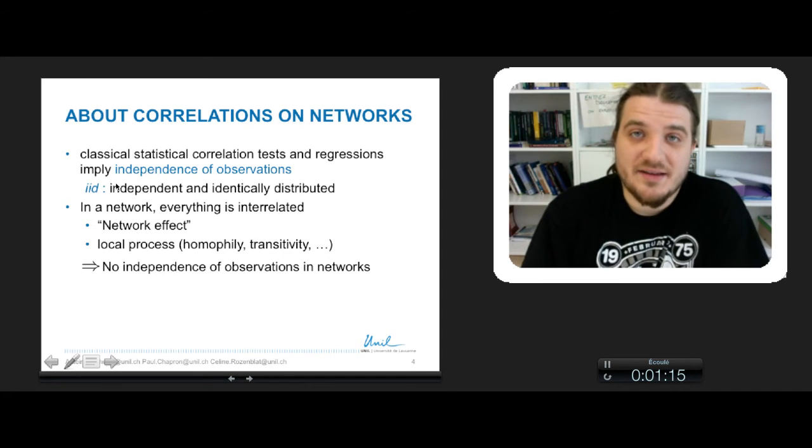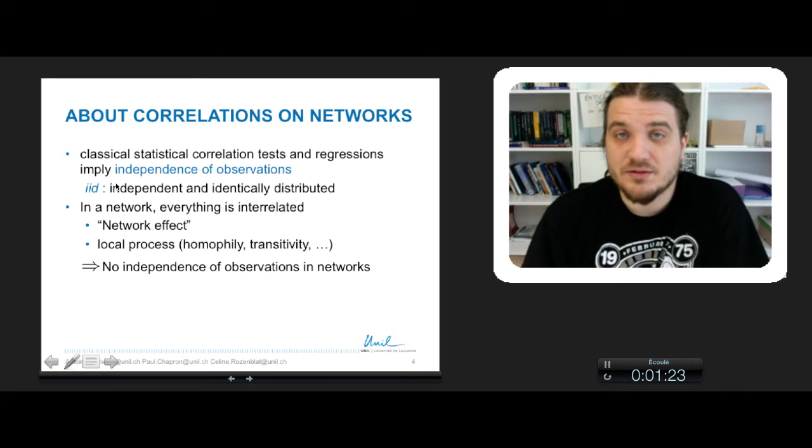You cannot have that in a network, because in a network everything is related, because of the network effects that make the node in relation with every other node. And also you already know that there is some local processes between nodes, for example homophily or transitivity, triadic closure and so on, that will guarantee that you have no independence of observation in the links of a network.